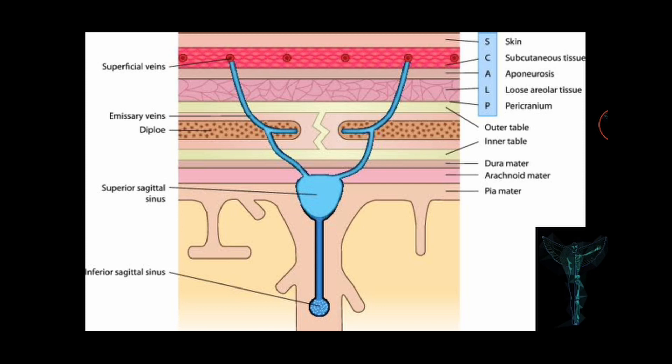The first layer, the skin, contains hair follicles and sebaceous glands — a common site for sebaceous cysts. The second layer is the subcutaneous tissue or dense connective tissue, which connects the skin to the epicranial aponeurosis. It is richly vascularized and innervated. The blood vessels within this layer are highly adherent to the connective tissue, rendering them unable to constrict fully when lacerated, so the scalp can be a site of profuse bleeding.